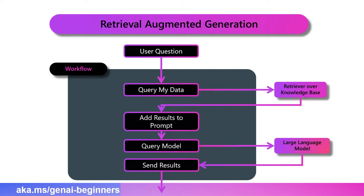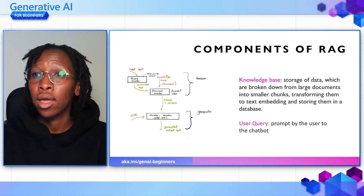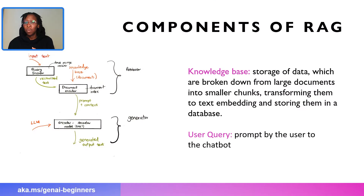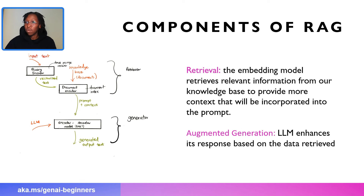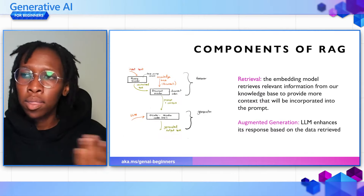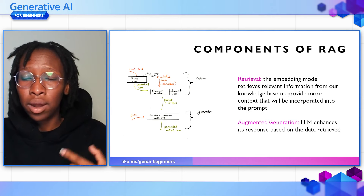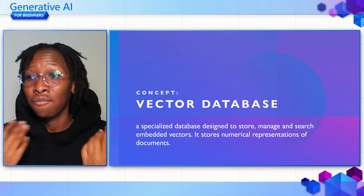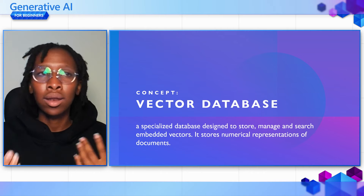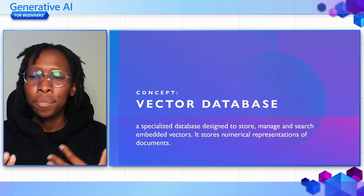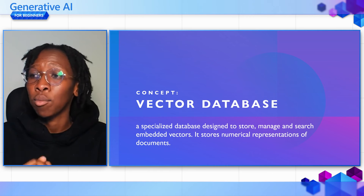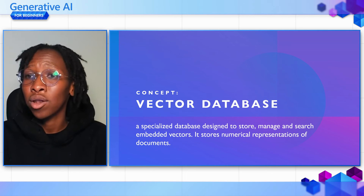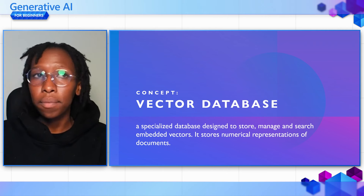The components of RAG include: one, a knowledge base whereby the data is stored and can be retrieved; a user query, when a user asks a question; and the retrieval system, where you build an entire system that can retrieve relevant information, augment it through the prompt provided, and generate a response based on the data retrieved. Now, how do you store your knowledge base? You use a vector database. A vector database is unique in that it can store embedded vectors — not just storing documents as they are, but also having numerical representations of your documents to interact with large language models.